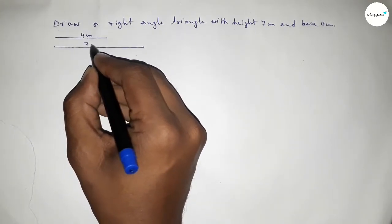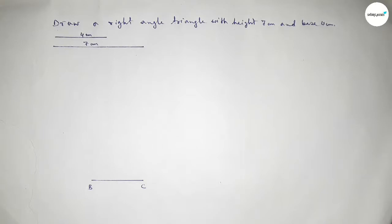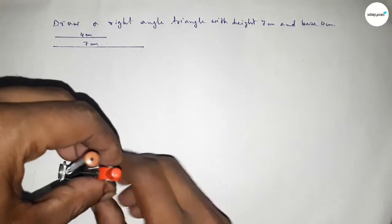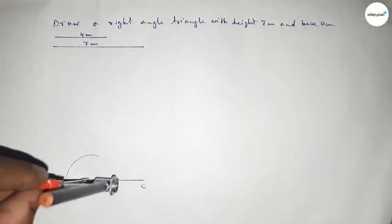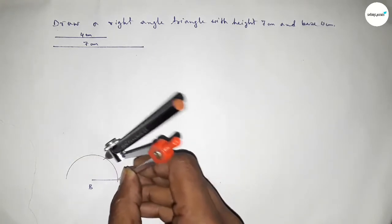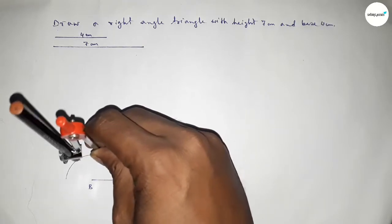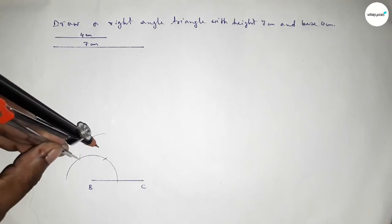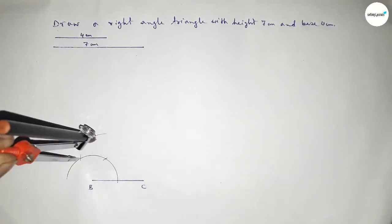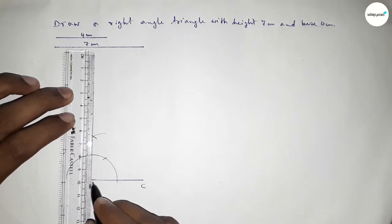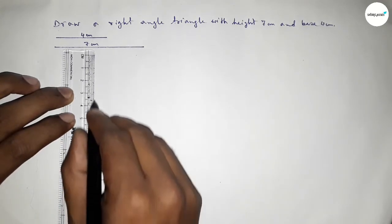This is 4 centimeters and this side is 7 centimeters. Now we draw a 90 degree angle at point B. Putting the compass on point B and drawing an arc, then placing the compass at the arc intersections and cutting arcs on each side, then drawing another arc with the same length so both curves intersect at a point. Joining this side to get a 90 degree angle.